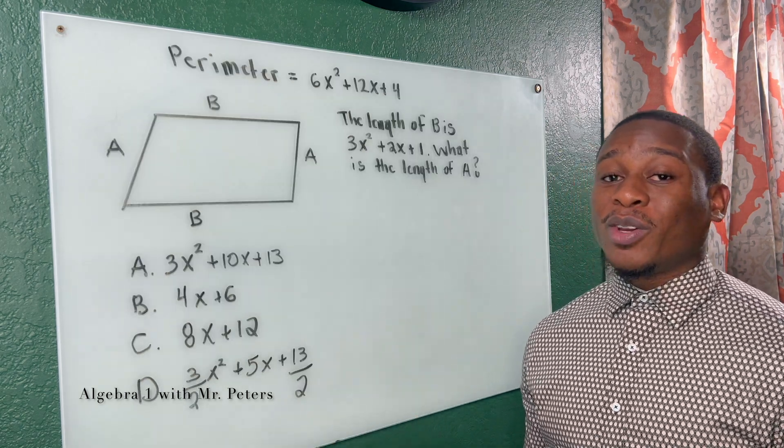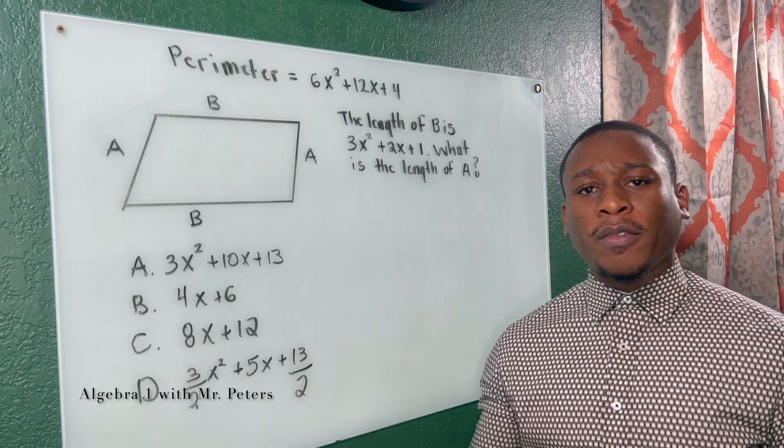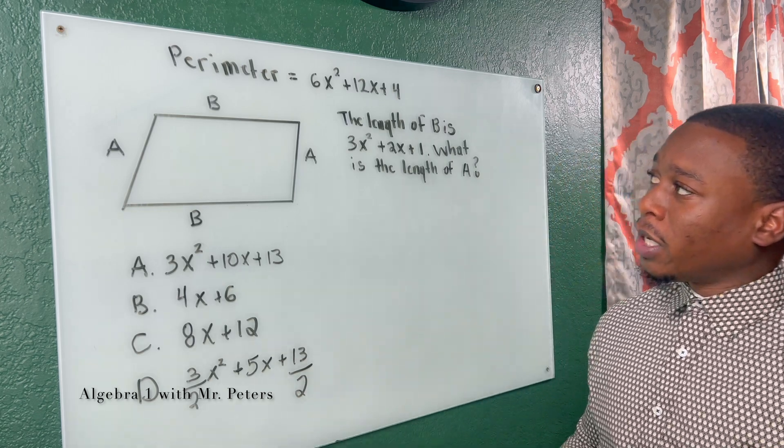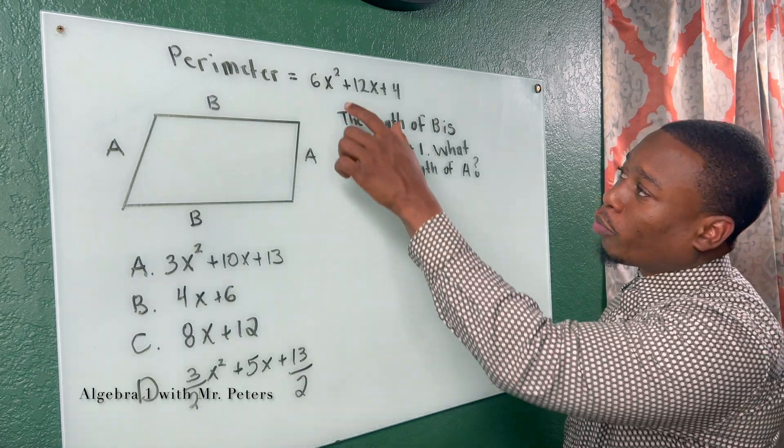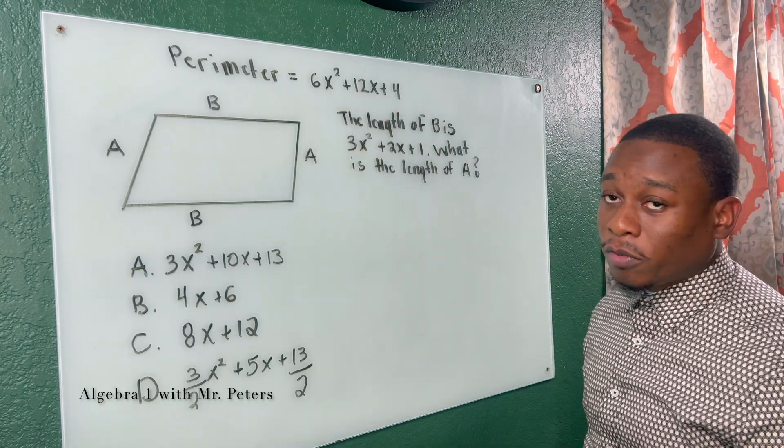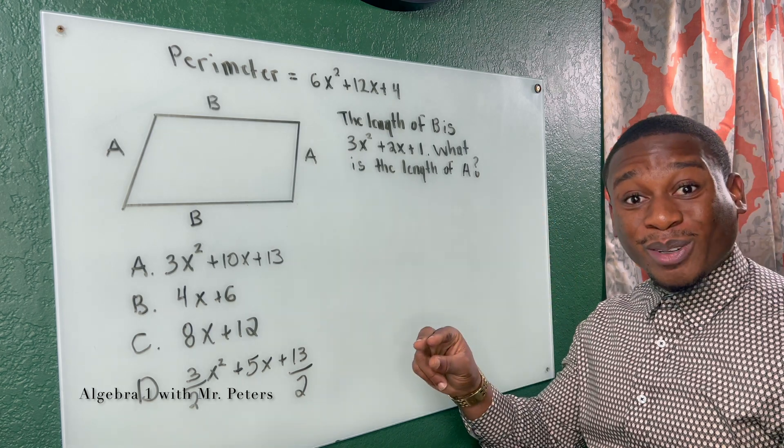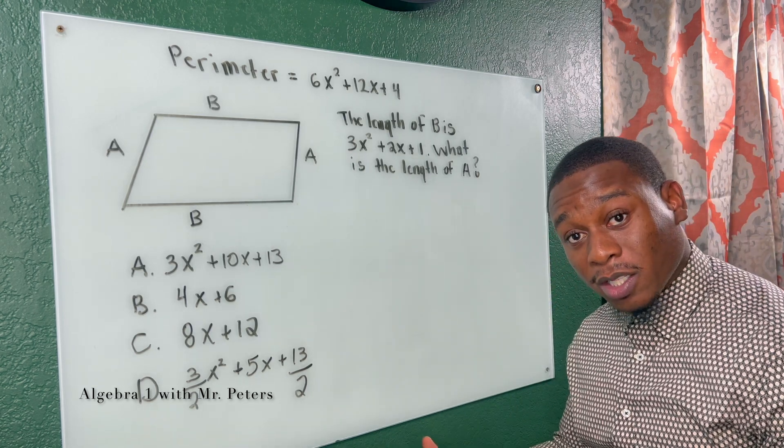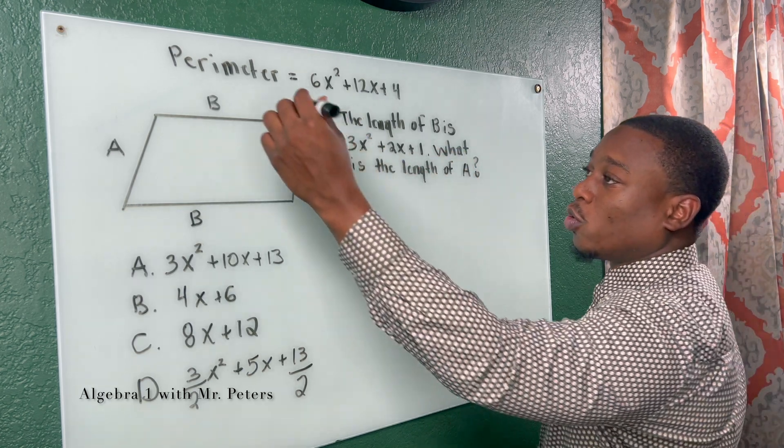So when we're talking about simplifying the expression and we're dealing with polynomials and fractions, remember the properties of exponents because that is probably going to be the most challenging part. And now we're going to move on to the last problem of this video. Moving on to the last problem, we really hope you found this material helpful. If you have, just smash the like button for us. So we're looking at a parallelogram, and it tells us the perimeter is 6x² + 12x + 4. That is the answer once you add all four sides.